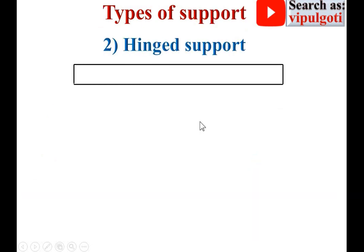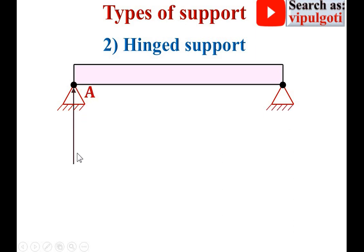Now the second support — hinge support. This is a beam with hinge support at the two ends. Here you can see the special symbol for hinge support. For example, this is end A. So at point A there is a vertical reaction and a horizontal reaction. RAH means reaction at point A in the horizontal direction, and RAV is the reaction at point A in the vertical direction.